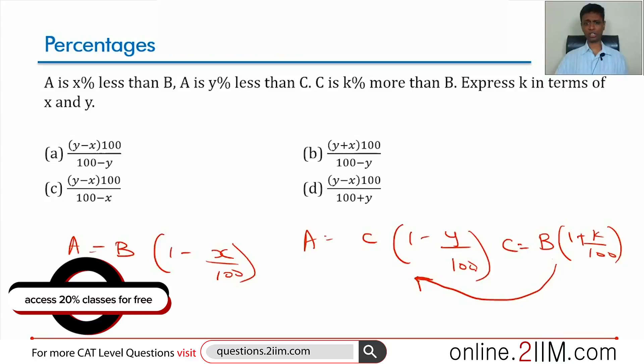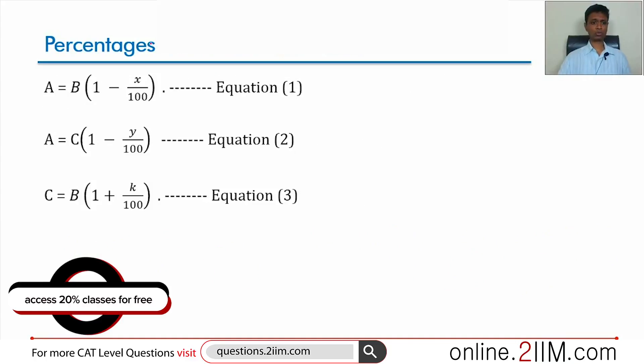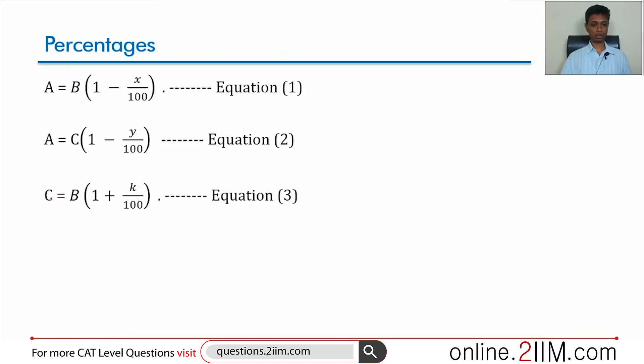Just got to recap this quickly and then build from there. It is B into 1 minus x by 100, C into 1 minus y by 100, B into 1 plus k by 100. So C is B into 1 plus k by 100, we are plugging it in here.